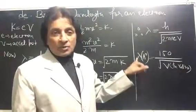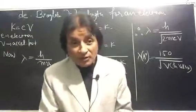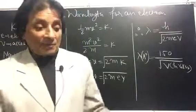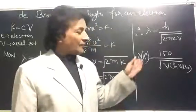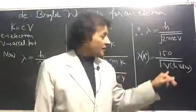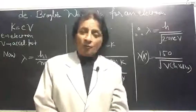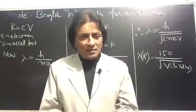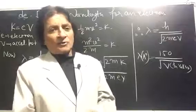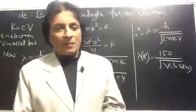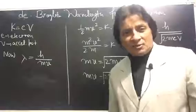So wavelength associated with an electron in angstroms is nothing but 150/√V in volts. Hope it is clear. So this is our second lecture on modern physics in the English version. Thank you very much, bye-bye, see you in the next lecture soon.